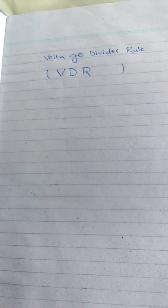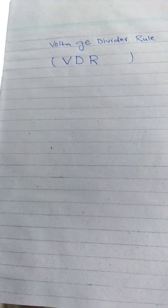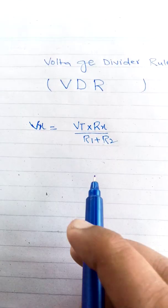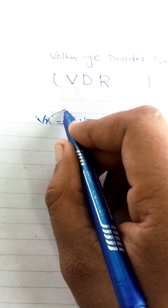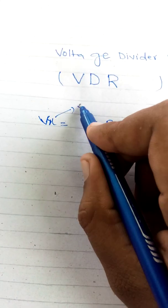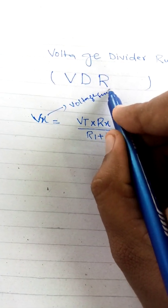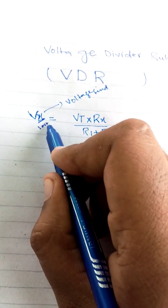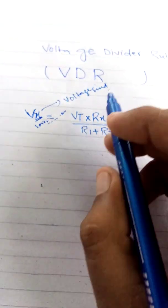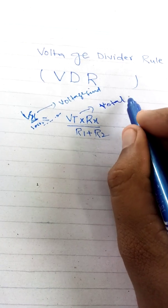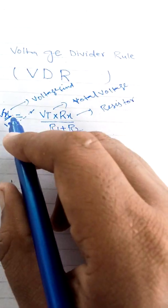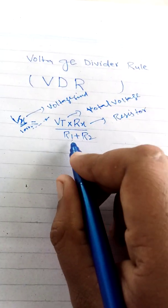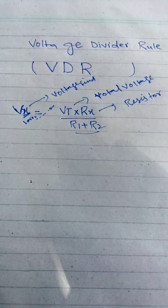Let's start the lecture. First, we write the formula for VDR: VX equals VT multiplied by RX, divided by R1 plus R2. Here VX is the voltage we want to find — either V1 or V2. VT is the total voltage, RX is the resistor across which we find VX, and R1 and R2 are the resistors in the circuit.